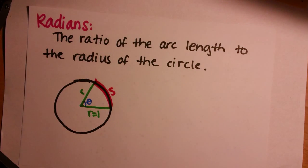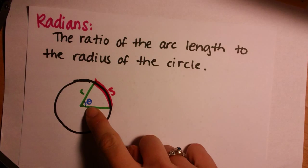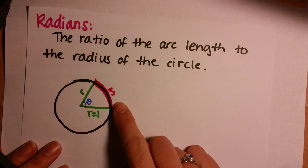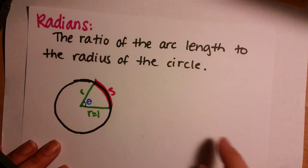So, we'll have our central angle theta, our radius r, and our arc length of the intercepted arc, s.